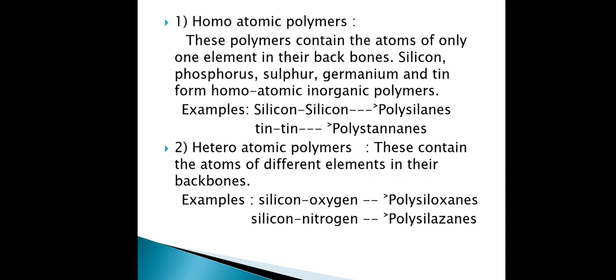The second type is heteroatomic polymers. These contain atoms of different elements in their backbones. For example, silicon–oxygen gives polysiloxanes, and silicon–nitrogen also gives polysilazanes. Homoatomic means the backbone is made up of one type of atom, while heteroatomic means the backbone is made up of two or more types of atoms.